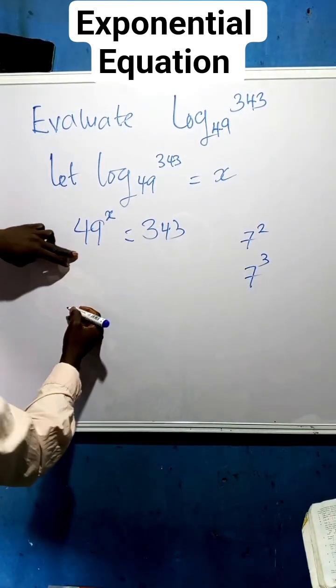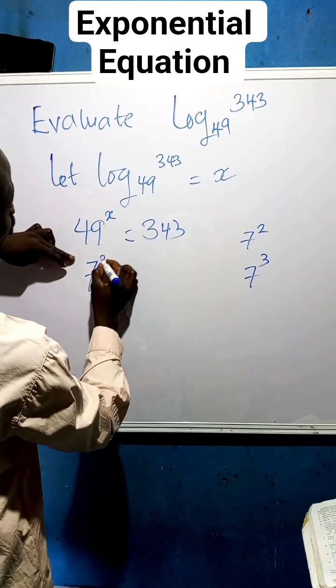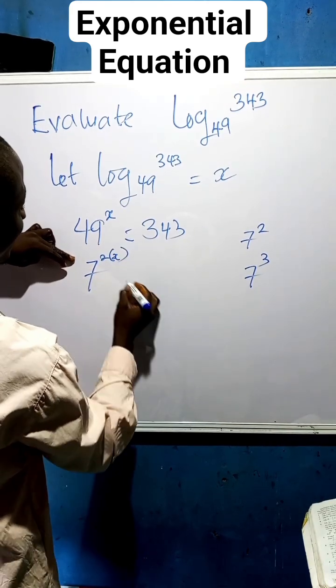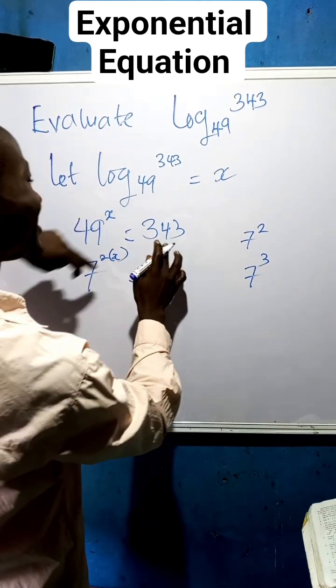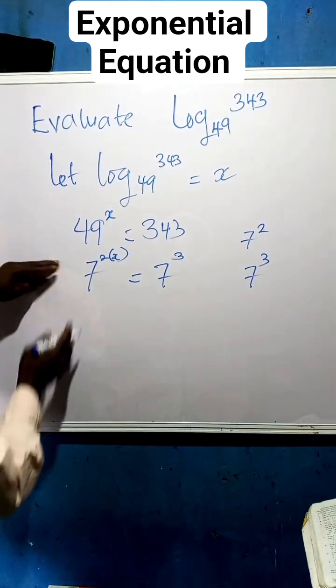So let us go. Instead of writing 49, we can equally write 7 squared times x, then equals to, instead of writing 343, we can write it to be 7 raised to the power of 3.